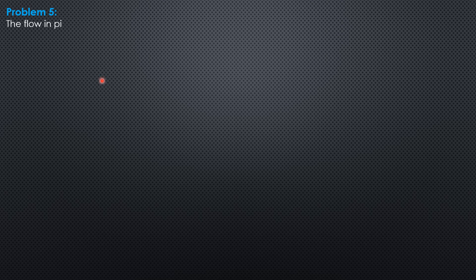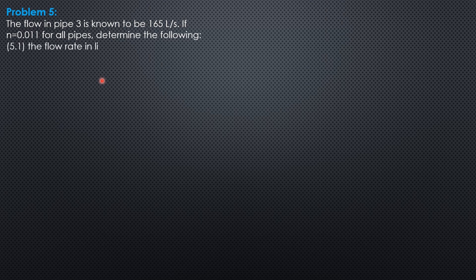Example 5 on series-parallel pipes and minor losses. The flow in pipe 3 is known to be 165 liters per second. The roughness coefficient Manning's n is 0.011 for all pipes. Determine the following: the flow rate in line 6, the flow rate in line 5, and the total head loss from A to E.